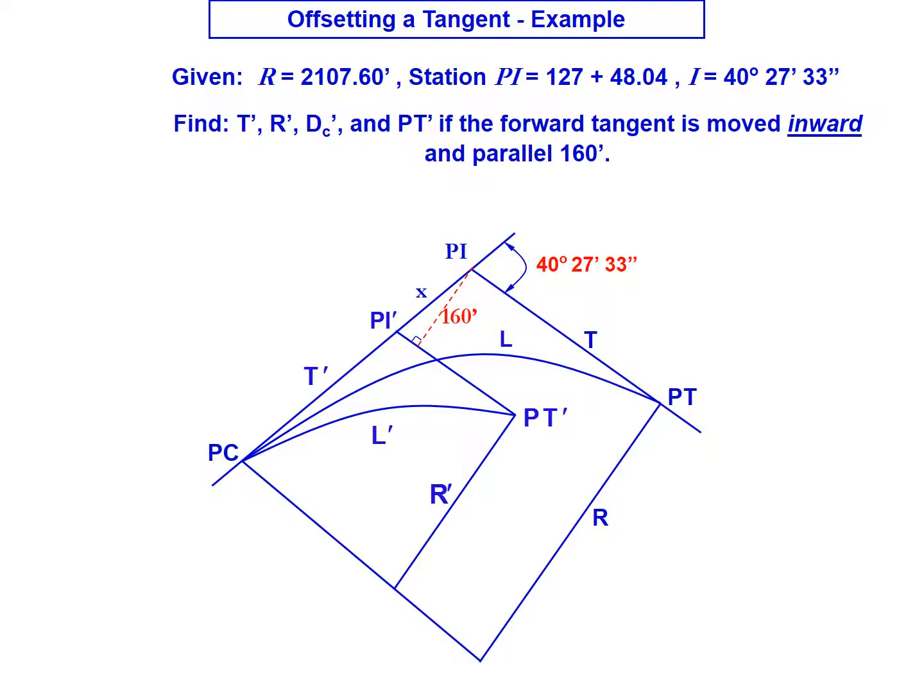In this video we're going to look at an example for offsetting a tangent. We're told that we have an existing curve with a radius of 2,107.6 feet.